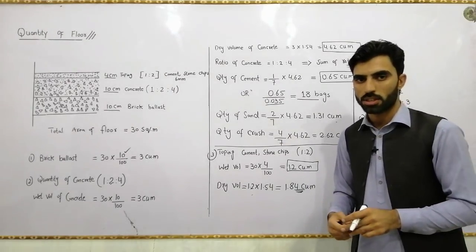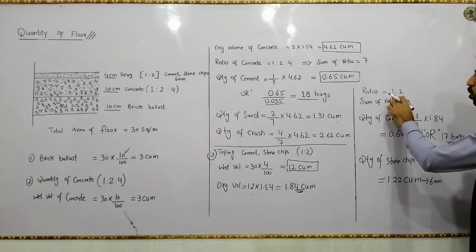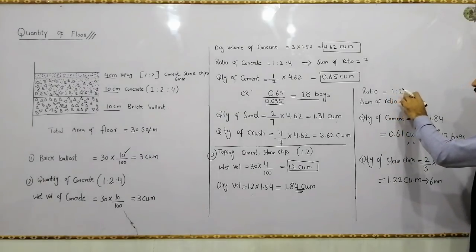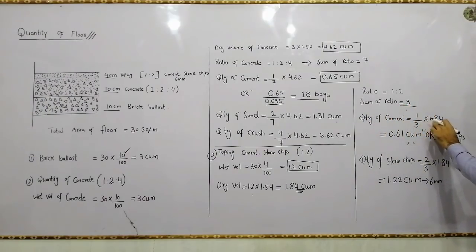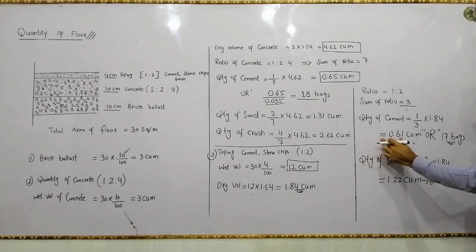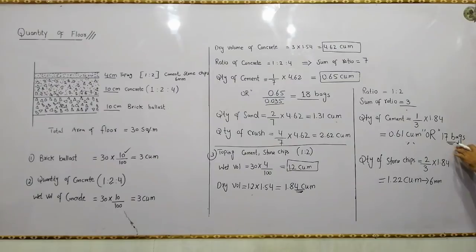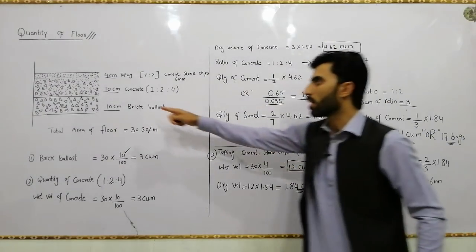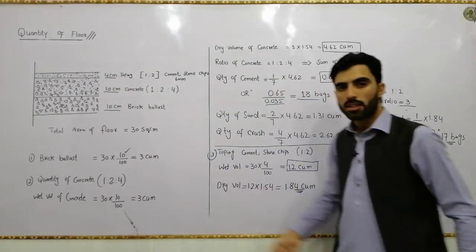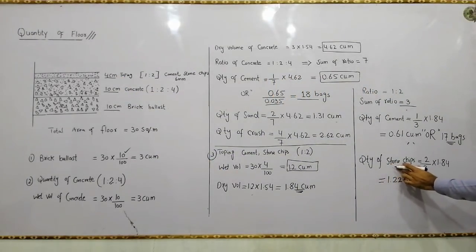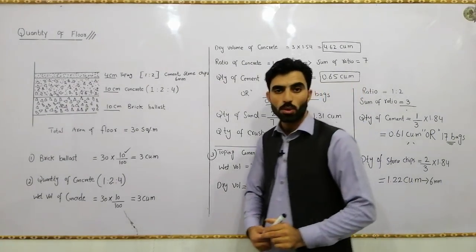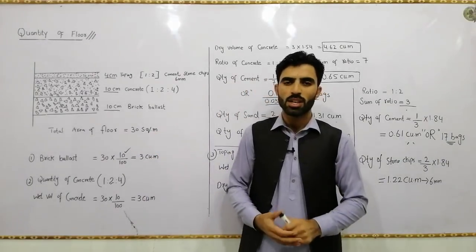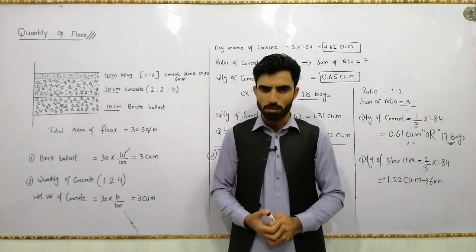The topping ratio is 1:2, where 1 is cement and 2 is stone chips, so the sum of ratios = 3. Quantity of cement = (1 ÷ 3) × 1.84 = 0.61 cubic meters, which equals 17 bags of cement for this layer for a total area of 30 square meters. Quantity of stone chips = (2 ÷ 3) × 1.84 = 1.22 cubic meters of 6-millimeter stone chips. If you have any questions, comment below. Thanks for watching, goodbye.